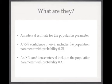So what is a confidence interval then? Well, it's an interval which estimates a population parameter. We know that a 95% confidence interval includes the population parameter with a probability of 0.95. Equivalently, a 90% confidence interval would include the population parameter with a probability of 0.9. And generalizing that, an x% confidence interval would include the population parameter with a probability of 0.x.